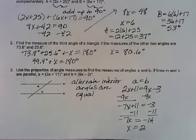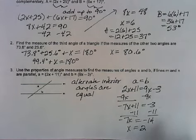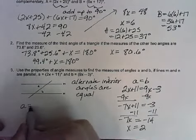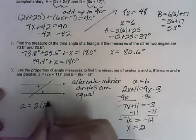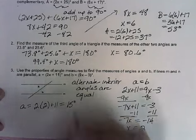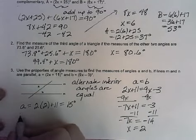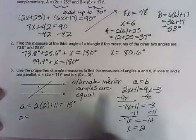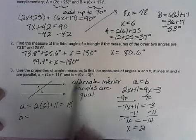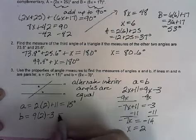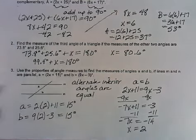And then we're solving for x. We end up with x equals 2. Then we're trying to find the measures of angles a and b. So to get a, I'm plugging in 2 for x in this expression. That gives me 15 degrees for a. And I already said that a was equal to b, so I should also get 15 when I plug 2 in for x here. And that does turn out to be 15 degrees.